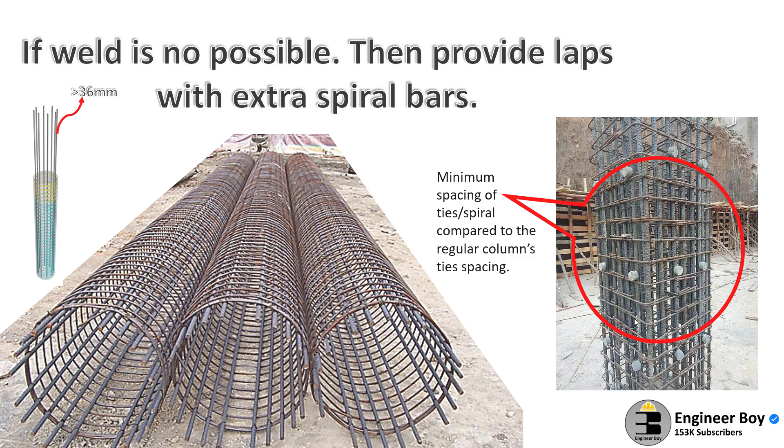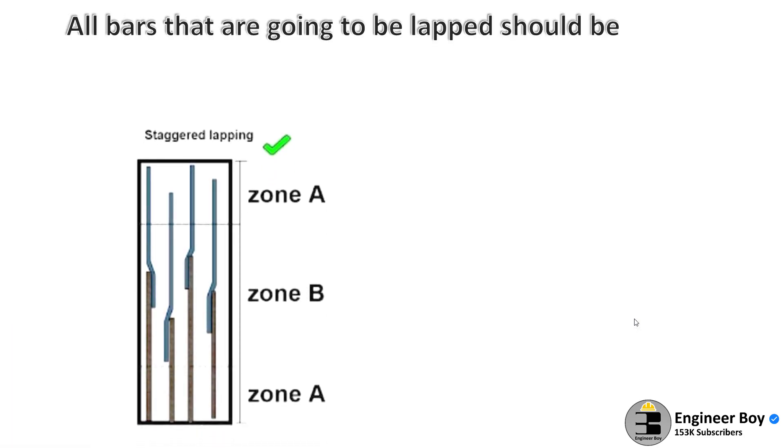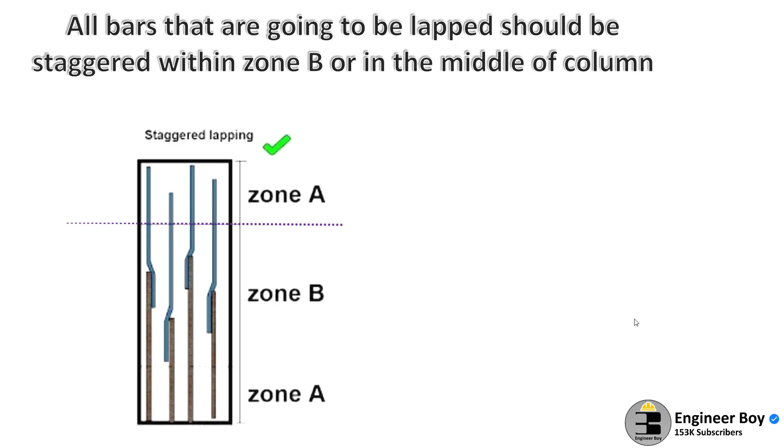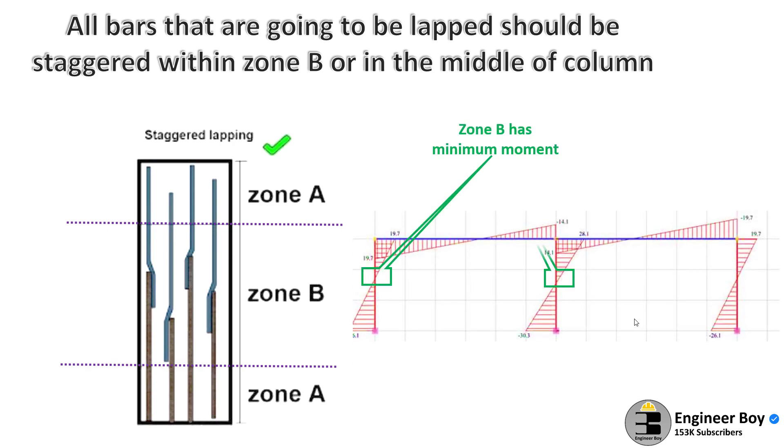All bars that are going to be lapped should be staggered within zone B or in the middle of the column. If you're familiar with shear force and bending moment diagrams, the moment in the middle is minimum or zero, and at the ends the moment is always maximum. So laps should be provided where moment is minimum.